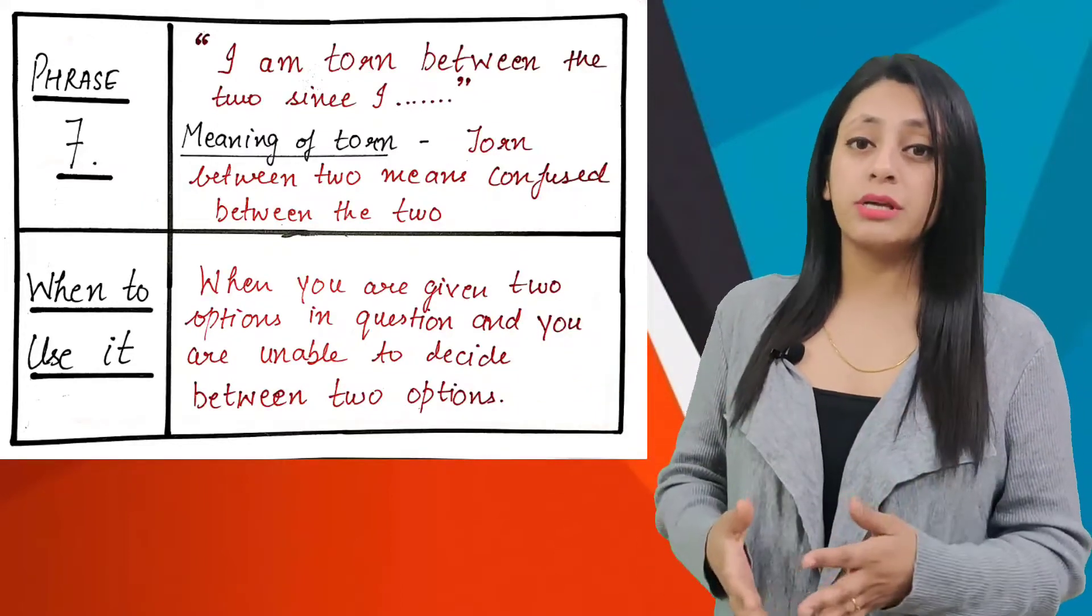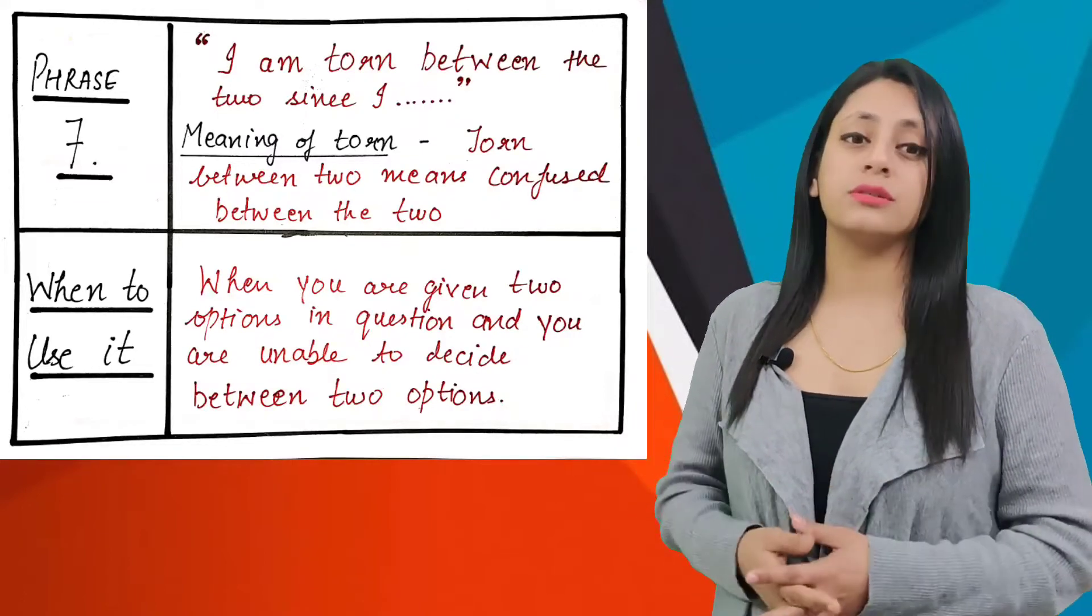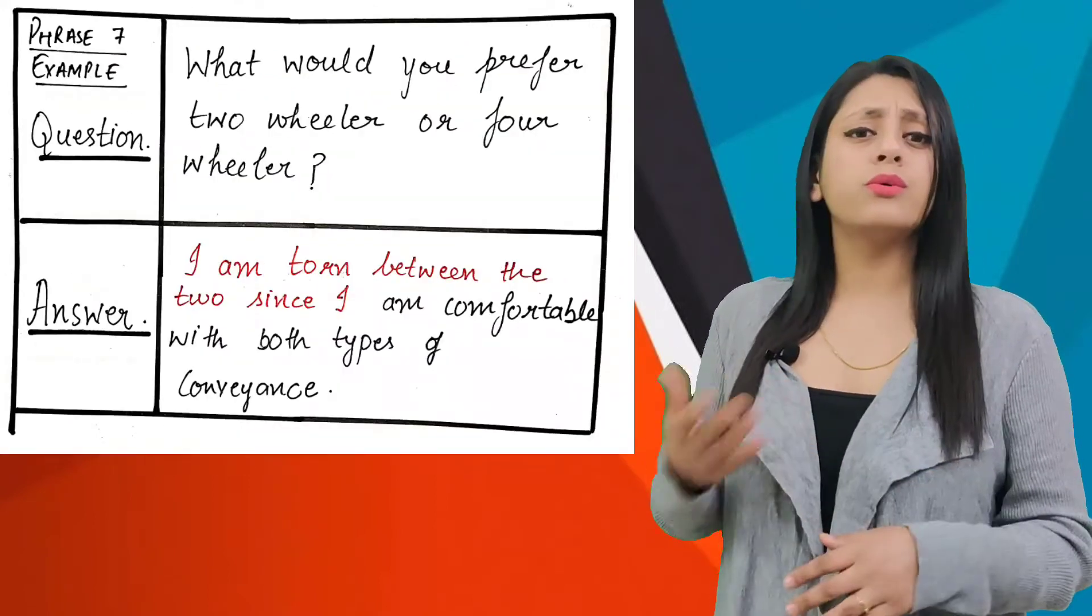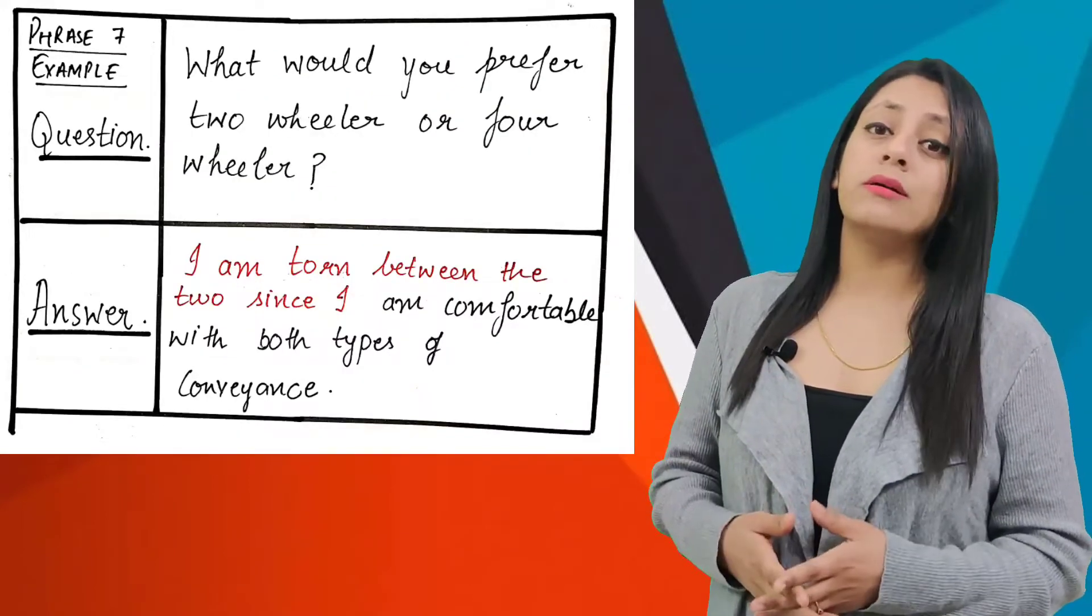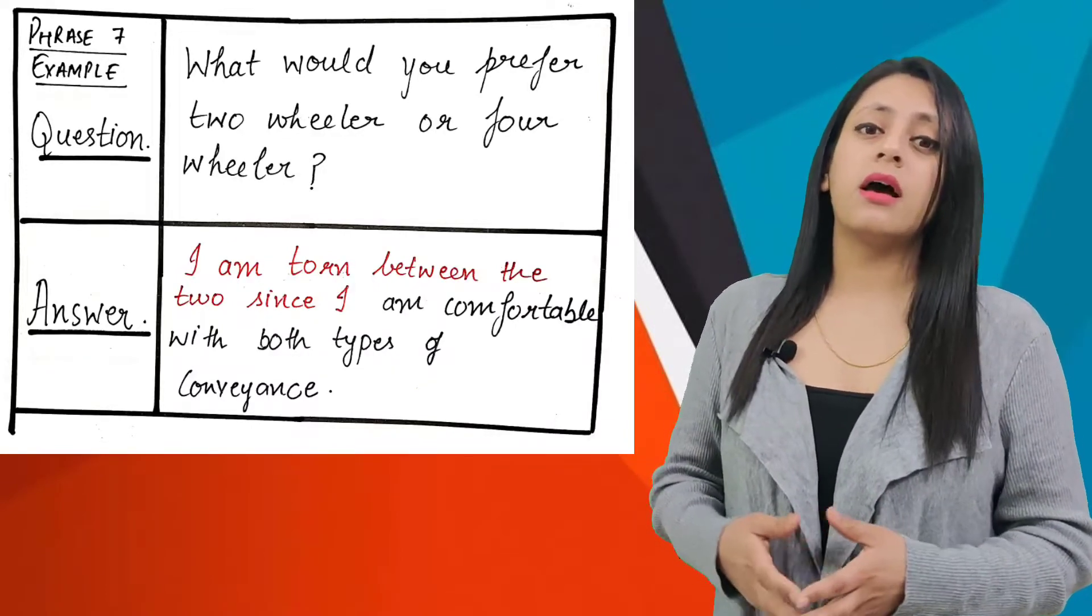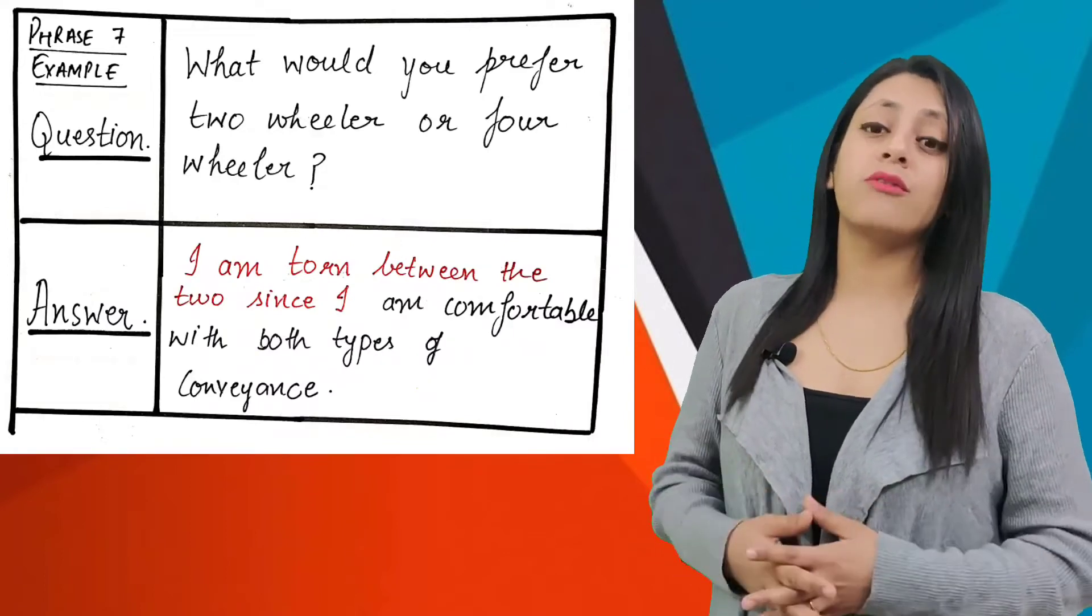When you are given two options in the question and you are unable to decide between them. For example, if you are asked what would you prefer, two-wheeler or four-wheeler, you can begin your answer like: I am torn between the two, since I am comfortable with both types of conveyances.